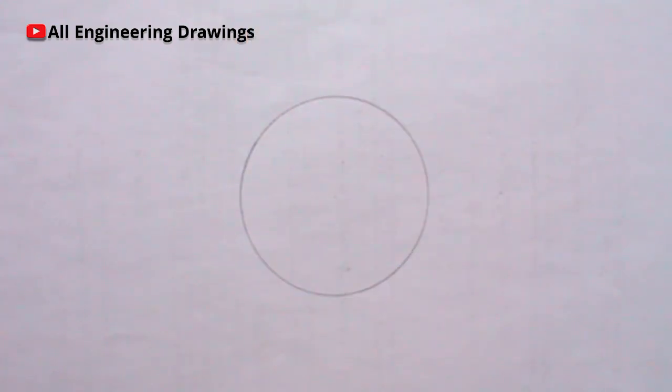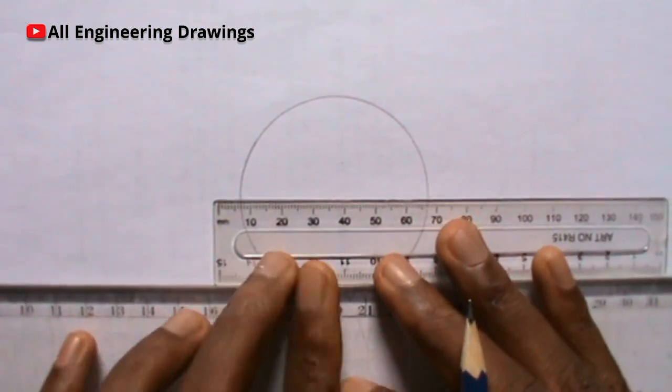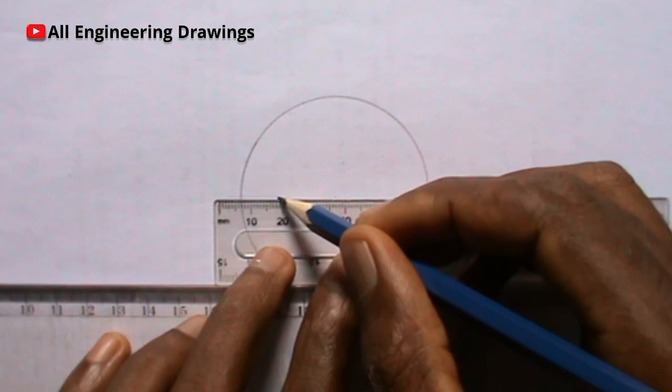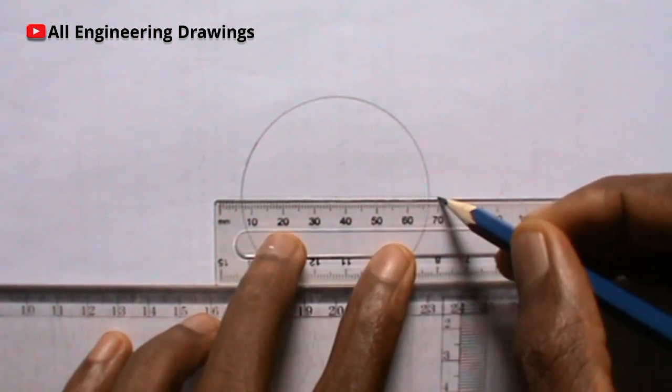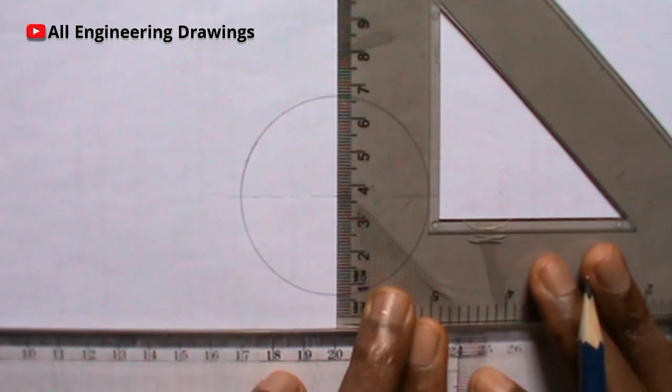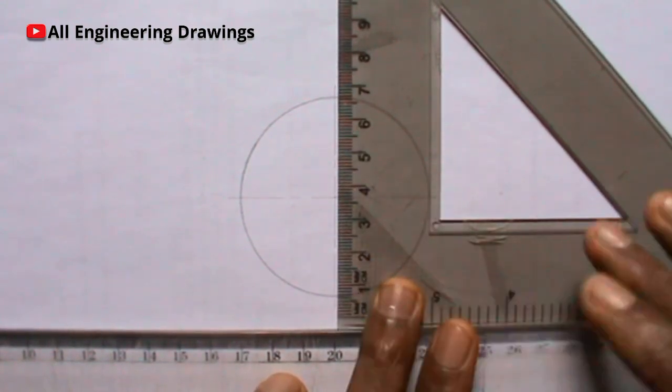Now we have our circle. Next is to draw horizontal and vertical lines passing through the center of the circle.